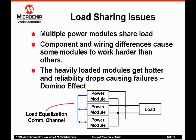A slow analog or digital communications link passes information among the modules to force the output voltages to a common value to enforce load sharing. The control loop is slow, working on a thermal time constant basis.